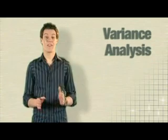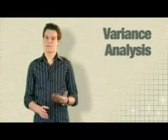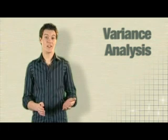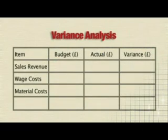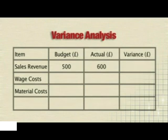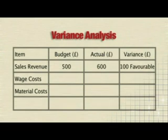It's easier if we use some figures. If you look at this table, you can work out if the variances are adverse or favourable. The first one is sales revenue — the budgeted figure was £500 and the actual figure was £600. This gives a variance of £100 favourable, because the company gained more revenue than they expected.